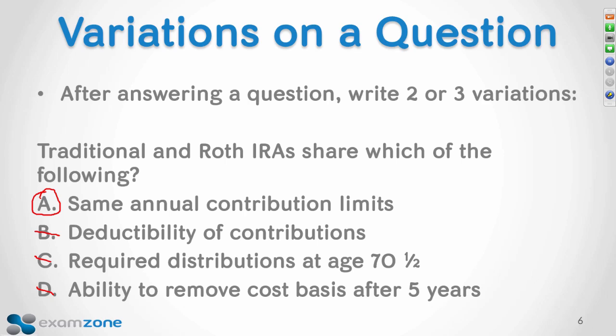A lot of us achievers like to see we got it right, tell ourselves we've got it covered, and move on. But at the testing center, the facts about traditional and Roth IRAs could be written into 25 different questions at varying difficulty levels. Getting one right isn't enough to say you've really learned the area. So if you're writing your own variations, go back to the textbook, ask what the main differences are, and write a new question.